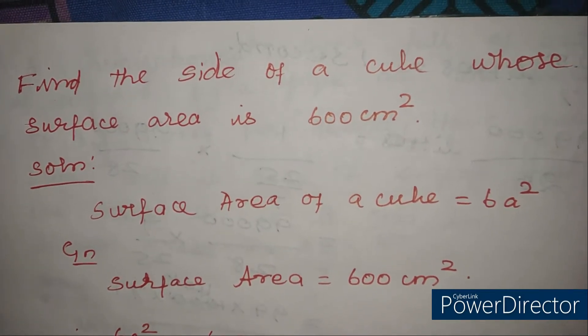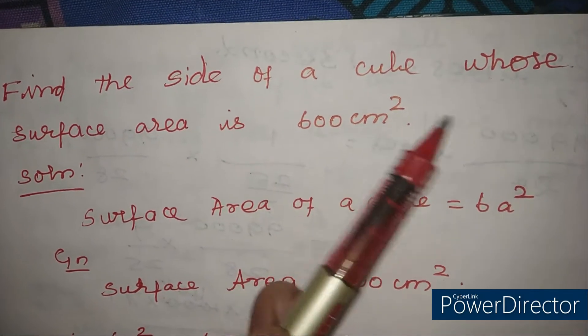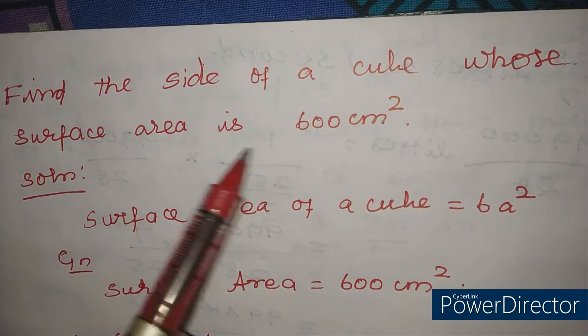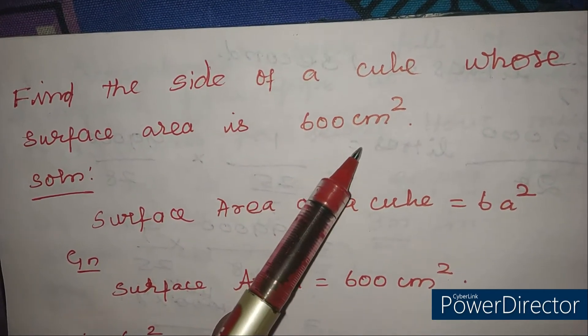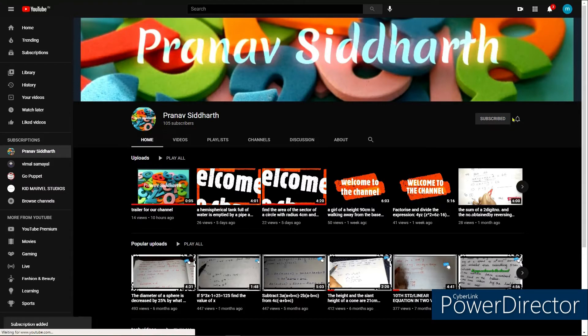Today I am going to teach the problem, that is, find the side of a cube whose surface area is 600 cm². Please subscribe to our channel.